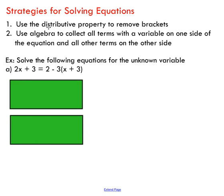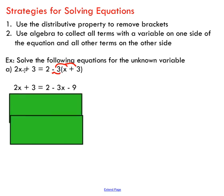Next, let's go over some strategies for solving equations. First, if you've got brackets, use the distributive property to remove them. Second, use algebra to collect all terms with a variable on one side of the equation and all other terms on the other side. So in this example, we solve for x. We take negative 3 and distribute it into the brackets: x times negative 3 gives negative 3x, and negative 3 times 3 gives negative 9.